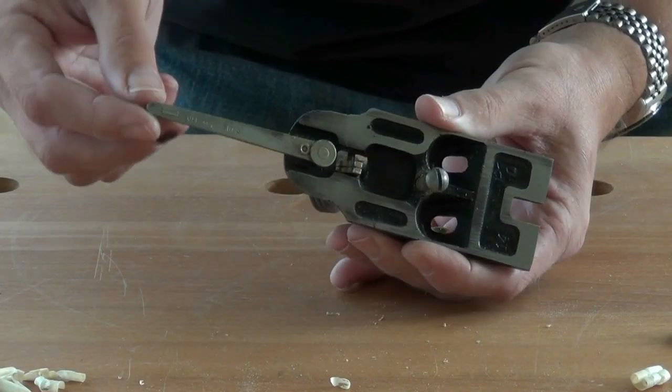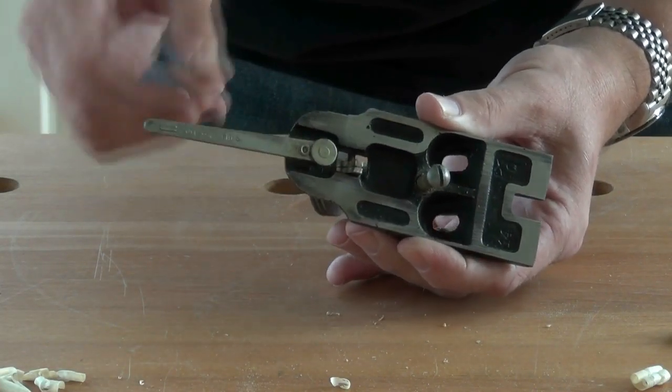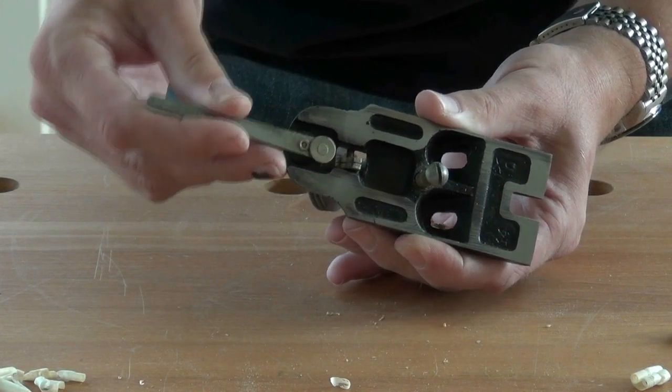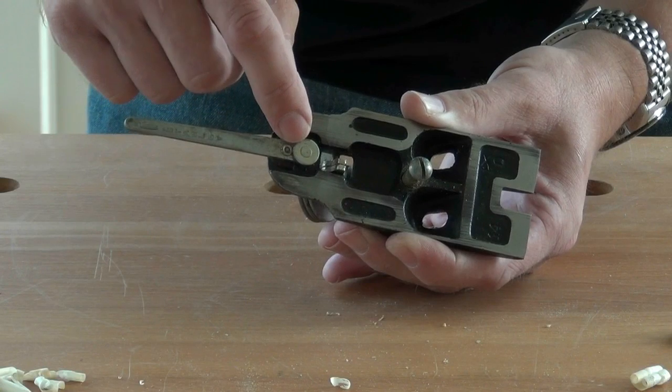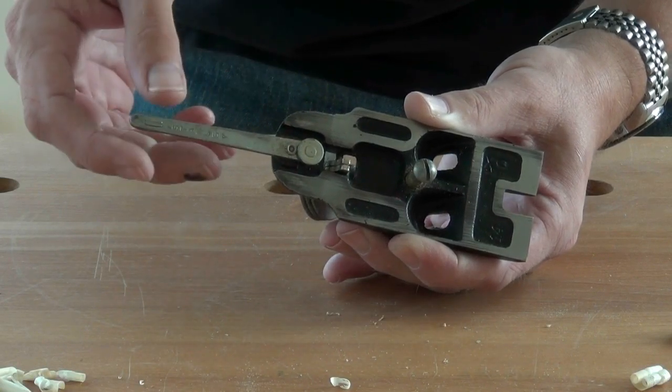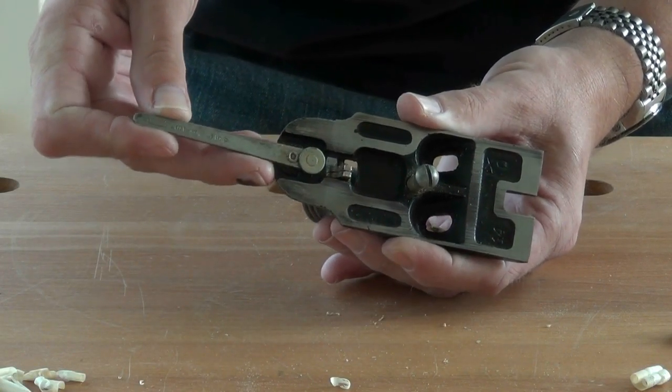There's also a lever which is riveted to the frog which has a circular washer on there that sits in the slot in the blade, and that's for the lateral adjustment.